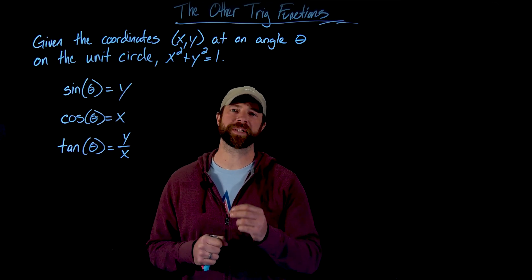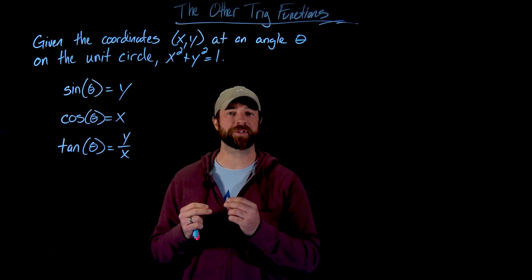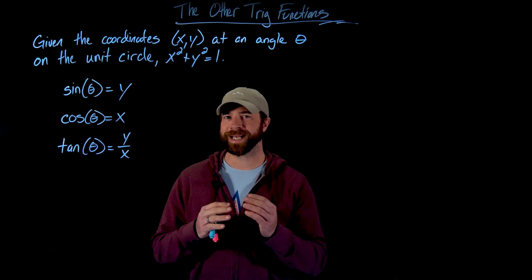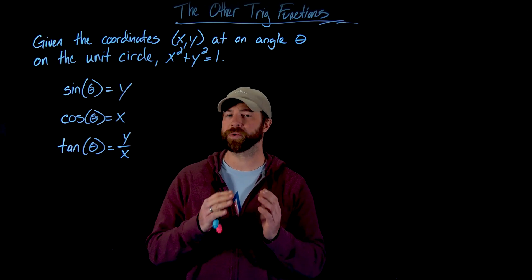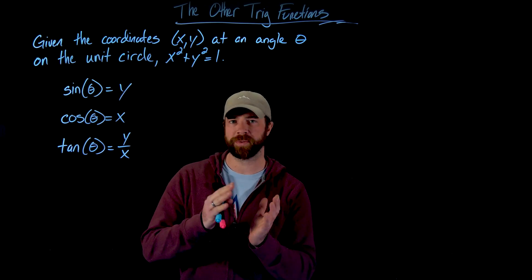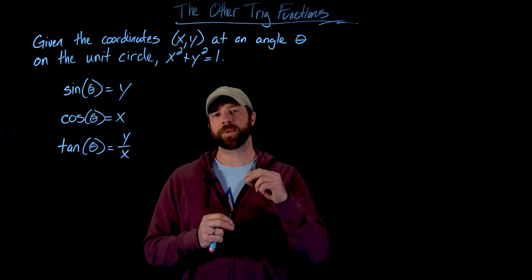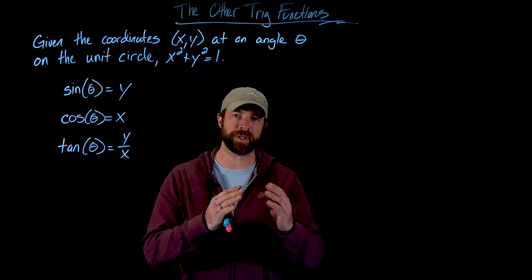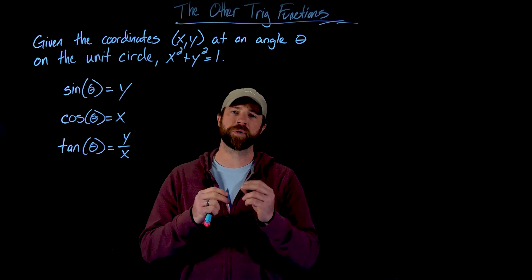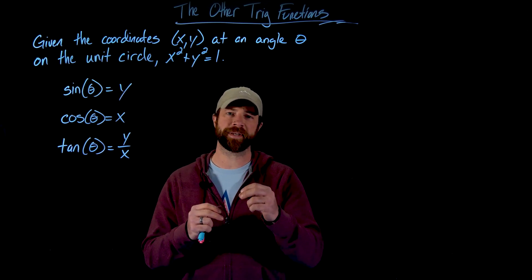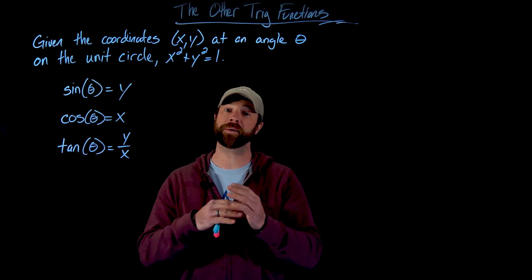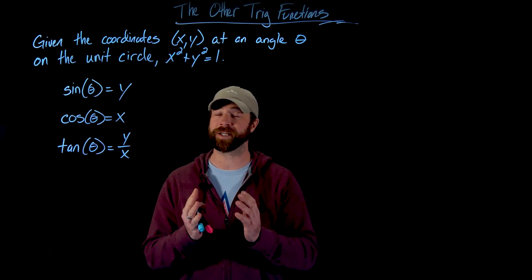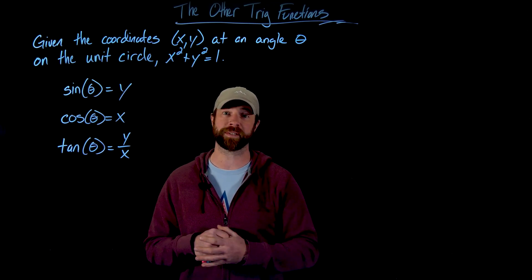As a review, we introduced the definitions of the trigonometric functions based on right triangles, but that limited us to acute angles between 0 and 90 degrees. We then superimposed these right triangles onto the unit circle so that we could create a definition for the trigonometric functions on angles larger than 90 degrees or less than 0 degrees.